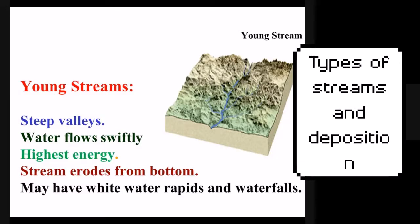Let's talk about stream evolution. The first type of stream is a young stream. Young streams are formed in steep valleys and mountains. They usually have water that flows very quickly and have high energy potential.